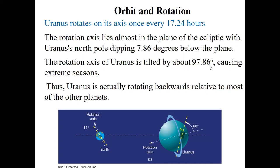The rotation axis of Uranus is tilted by 97.86 degrees. Remember, Earth is 23 and a half. Uranus is tilted 97.86 degrees. This is the rotation axis of Uranus. It's tilted all the way down passing 90 degrees.